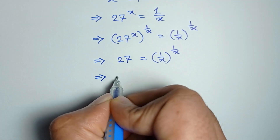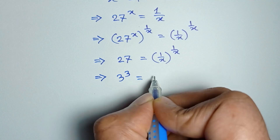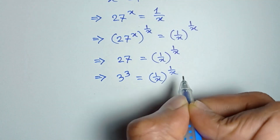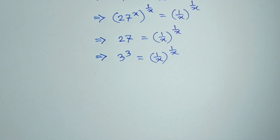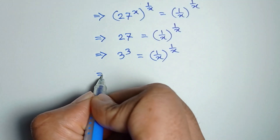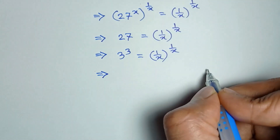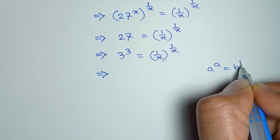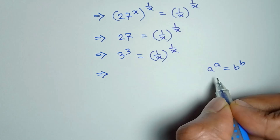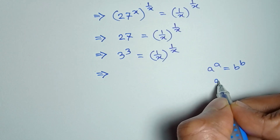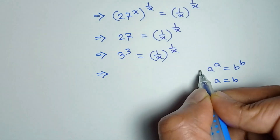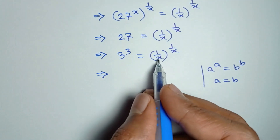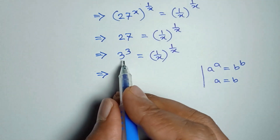We can write 3 to the power 3 is equal to 1/x to the power 1/x. From the pattern: if a to the power a equals b to the power b, then comparing both sides, a equals b. So here a equals 3 and b equals 1/x.